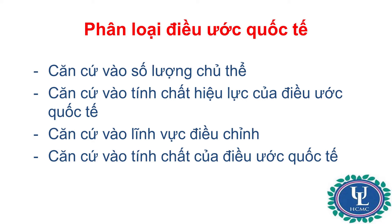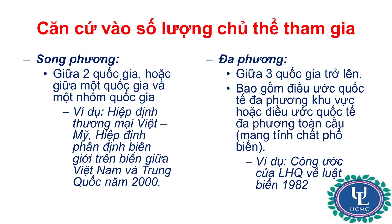Thứ nhất, phân loại điều ước quốc tế căn cứ vào số lượng các chủ thể. Thứ hai, căn cứ vào tính chất hiệu lực của điều ước quốc tế. Thứ ba, căn cứ vào lĩnh vực điều chỉnh của điều ước. Thứ tư, căn cứ vào tính chất của điều ước. Về tiêu chí thứ nhất, nếu căn cứ vào số lượng các chủ thể tham gia, thì điều ước quốc tế có thể được chia thành điều ước song phương và điều ước đa phương.